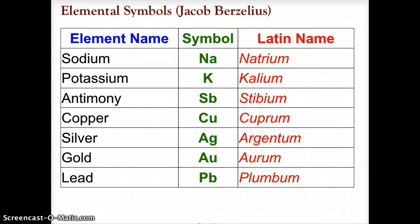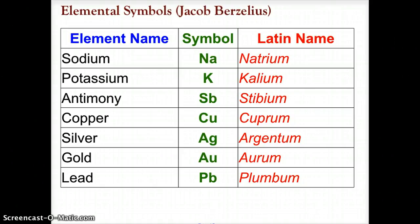Some elements still go by their Latin name, since most original science was recorded in Latin. So some elements on the periodic table don't seem to match up. For instance, sodium is Na, from its Latin name Natrium, and potassium K comes from the Latin Kalium. Lead is capital P, lowercase B, from the Latin word plumbum. Lead piping was very common, and that's where the word plumber comes from — plumbum, Pb for lead, and the name plumber.